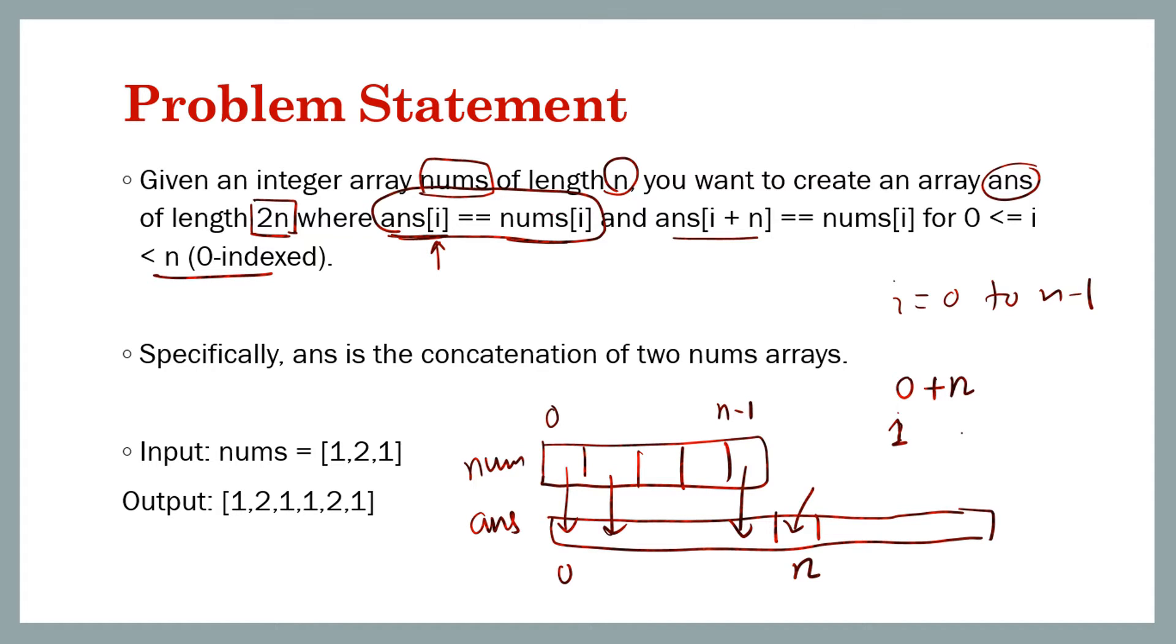This is the max value of i, which is n minus 1, and we are adding n to it, so 2n minus 1. That is the last index in the resulting array.